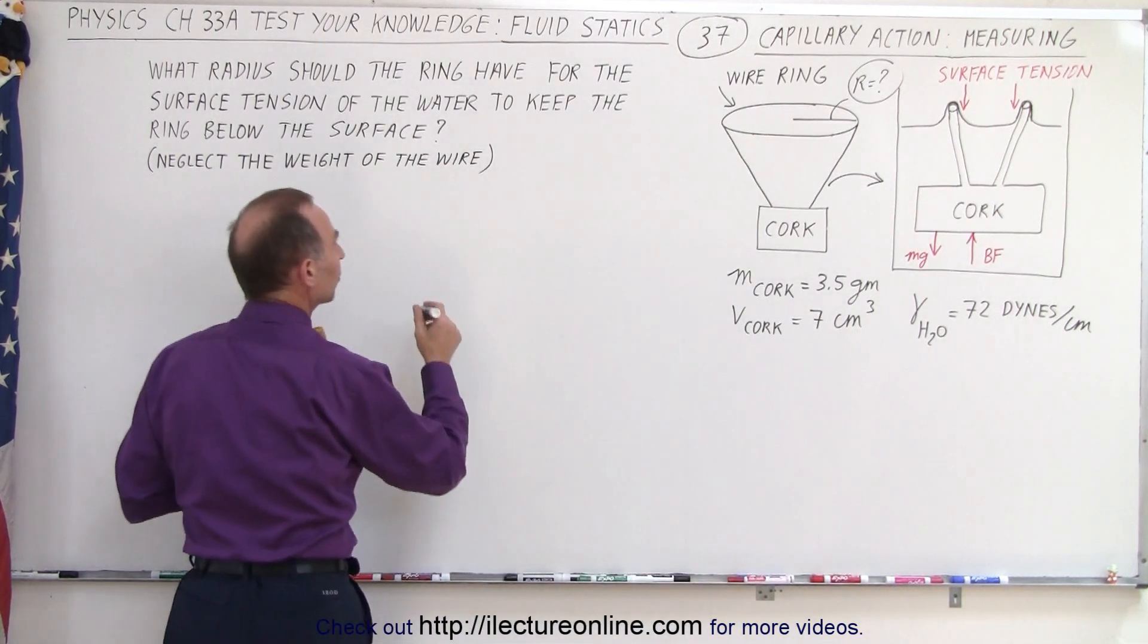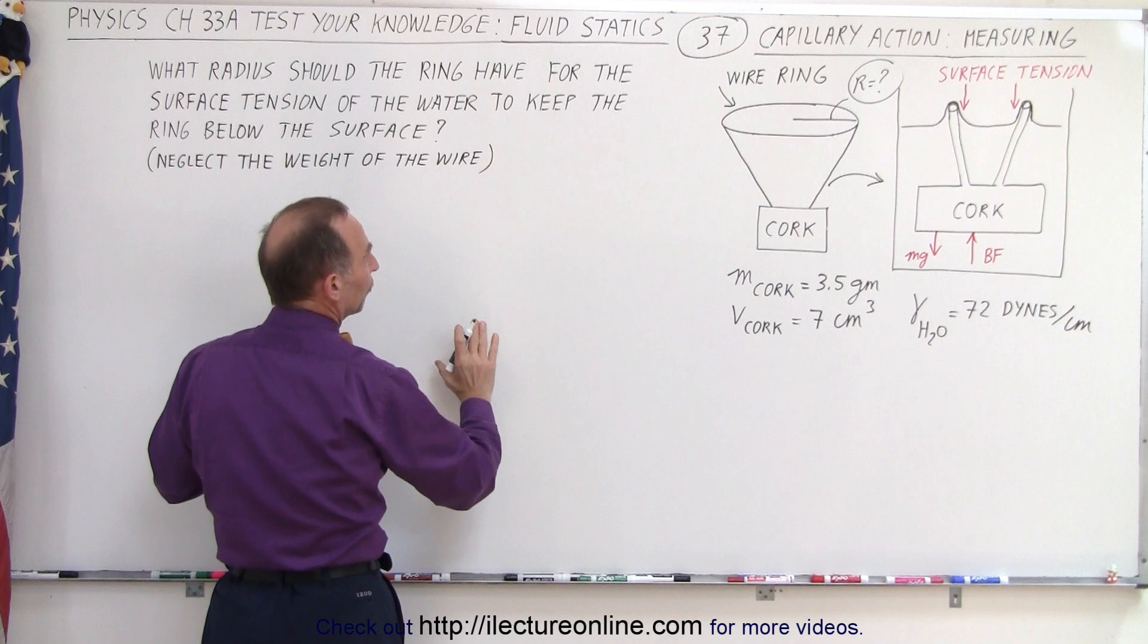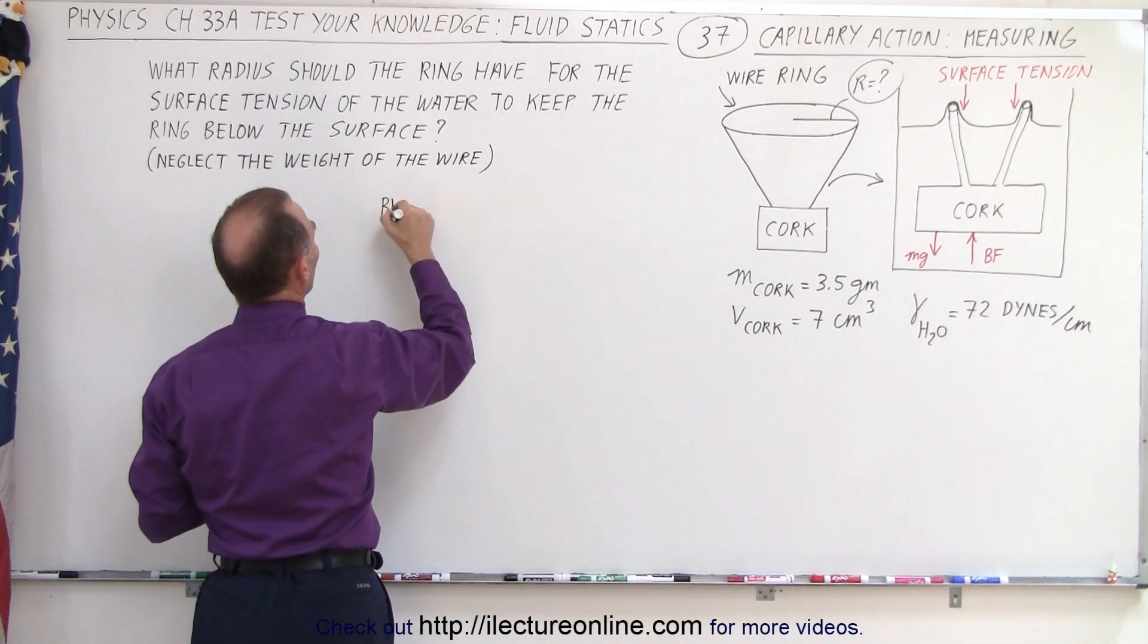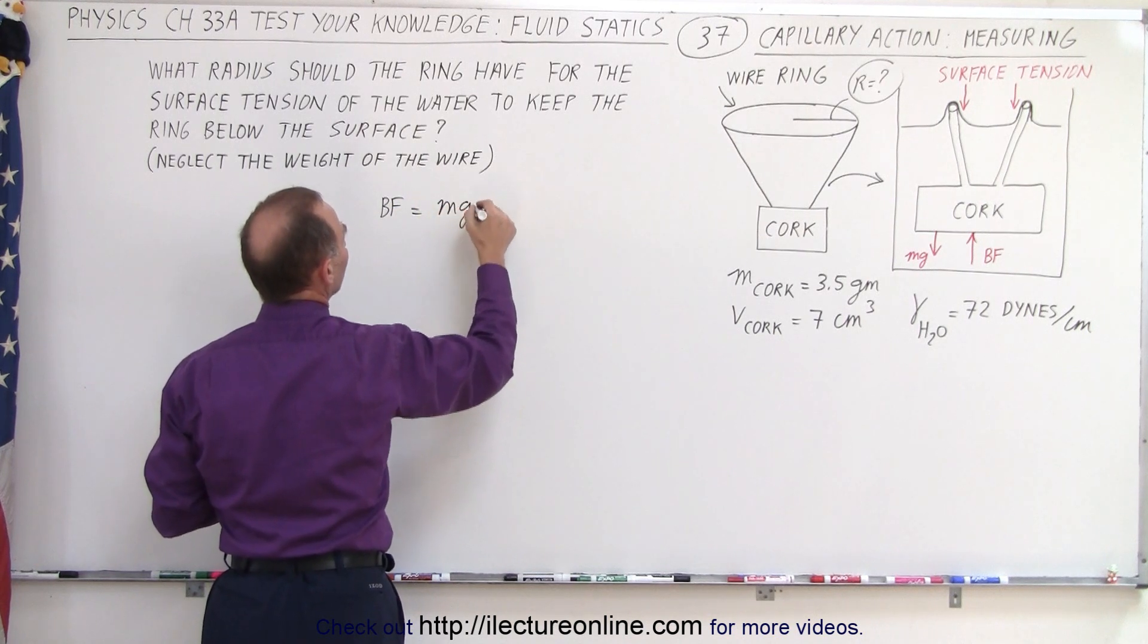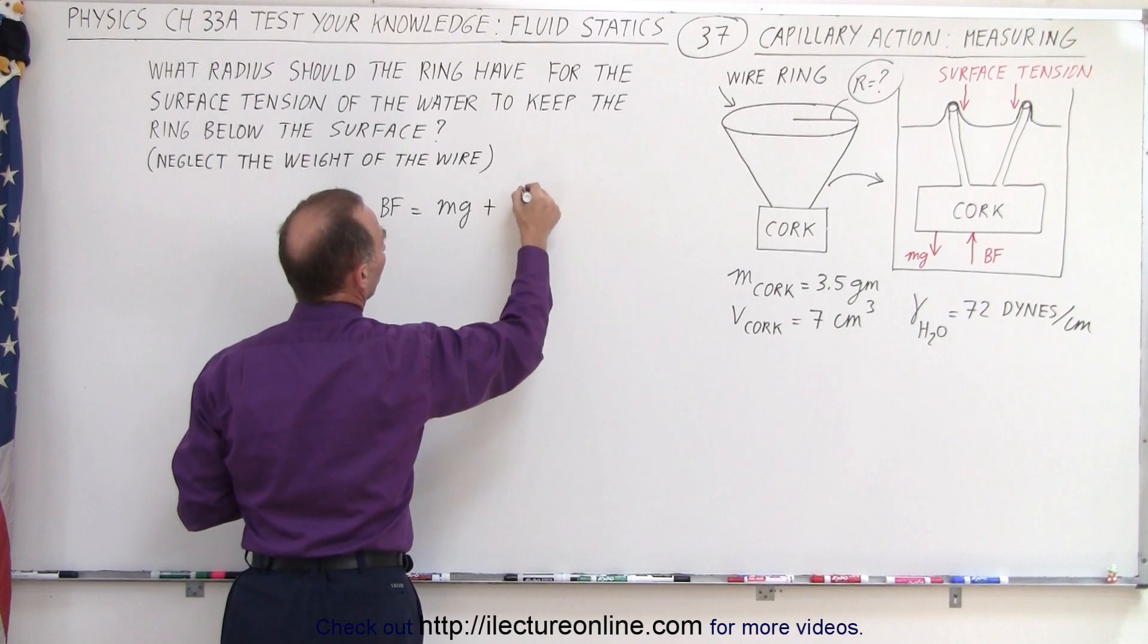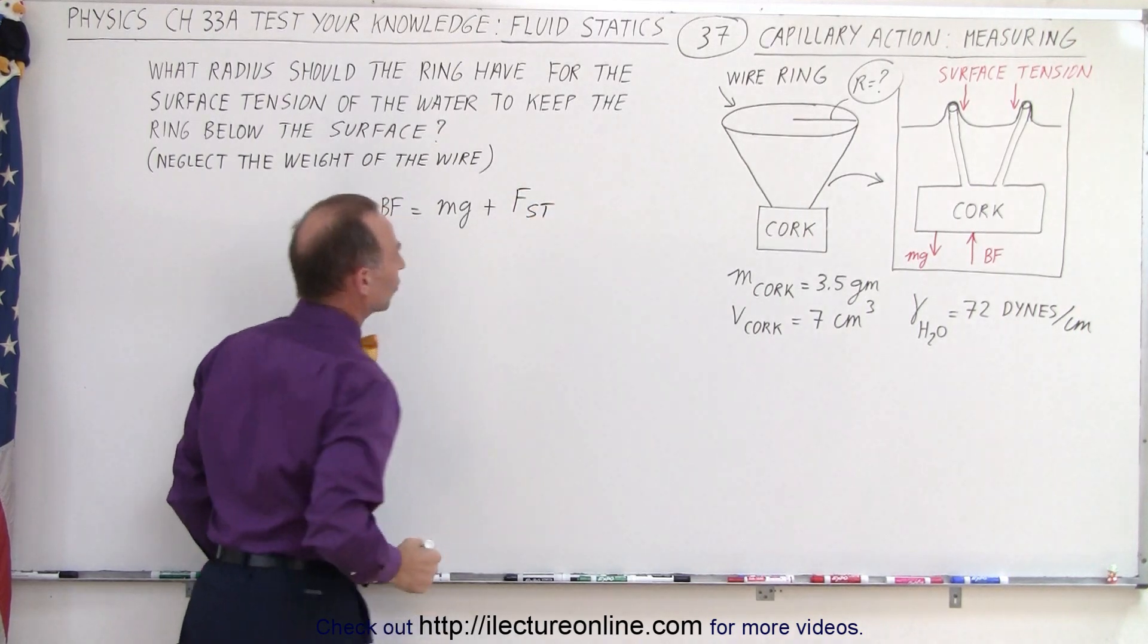We're going to need an equation where all the forces up must equal all the forces down. So the buoyancy force pushing up must equal the weight of the cork plus the surface tension, the force of the surface tension.